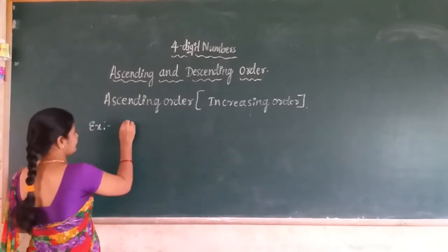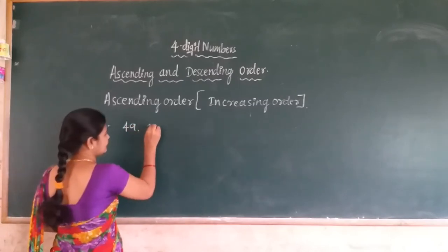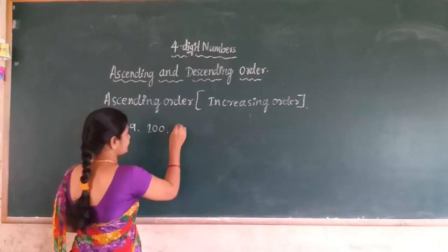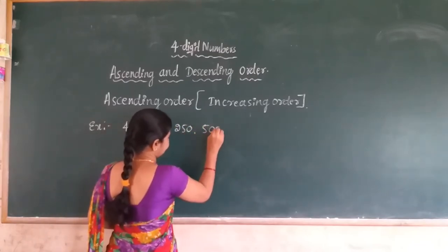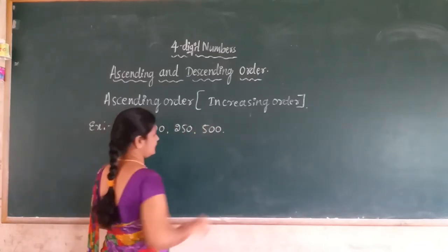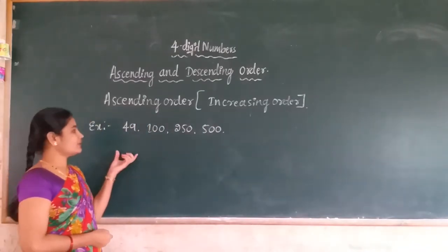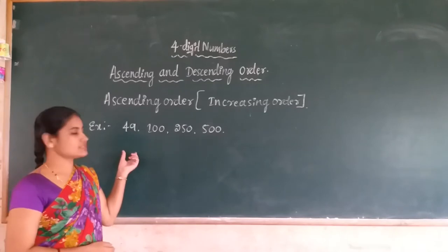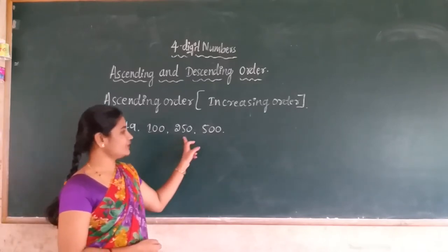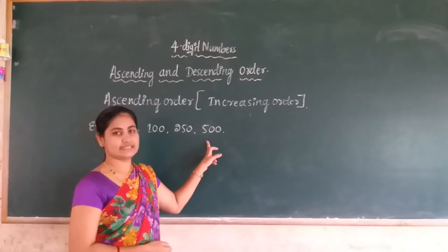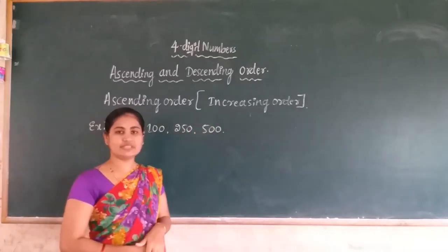For example: 49, 100, 250, and 500. I will show one arrangement of the numbers. The first one is 49, 100, 250, and 500. This is the ascending order or increasing order of the numbers.